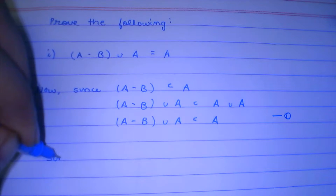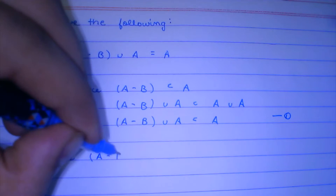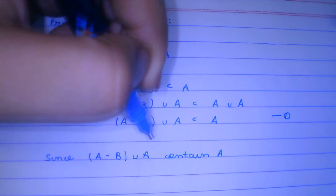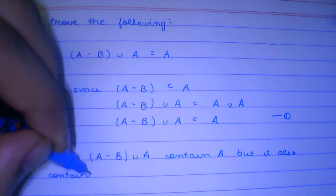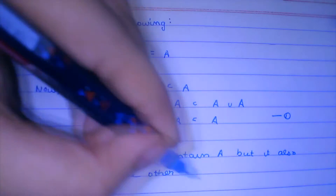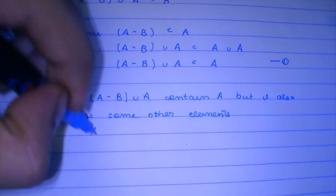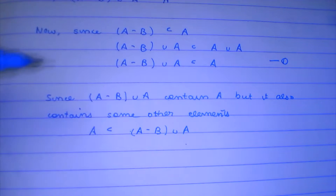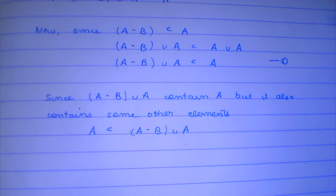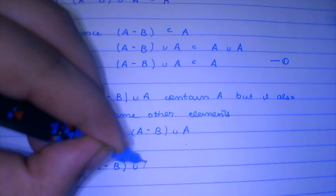Let this be our first conclusion. Now we can also see that A minus B union A contains A — it contains A, but it also contains some other elements — which means that A is a subset of (A minus B) union A. So we have proved that (A minus B) union A is a subset of A, and A is also a subset of (A minus B) union A. In conclusion, (A minus B) union A is equal to A.